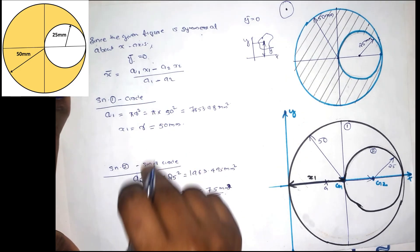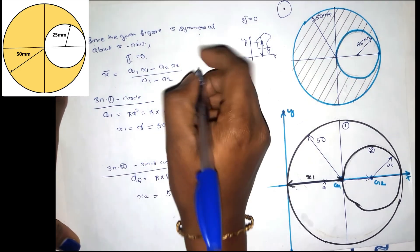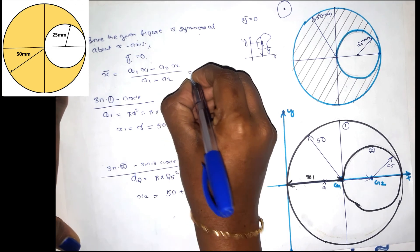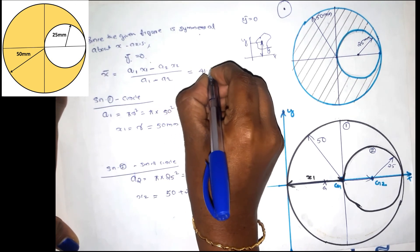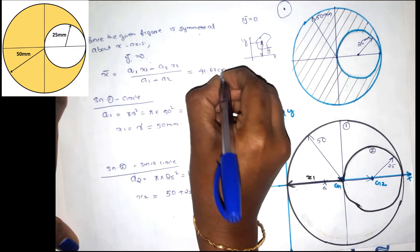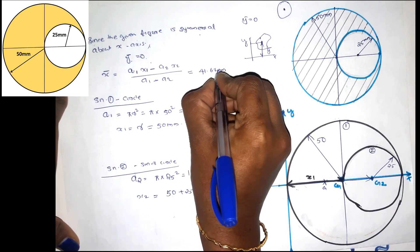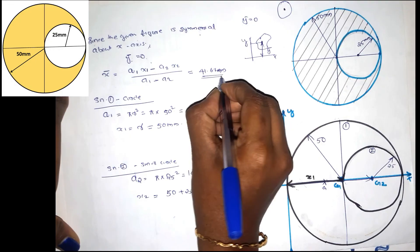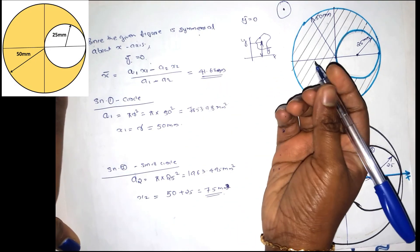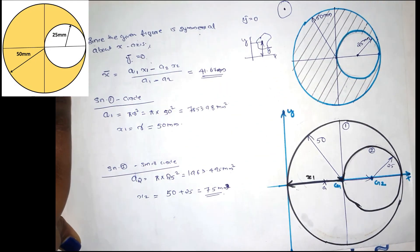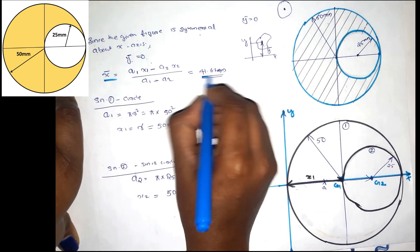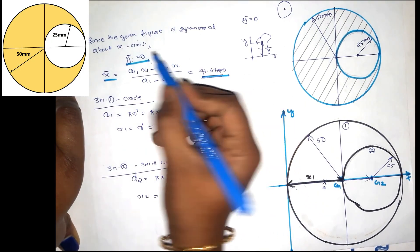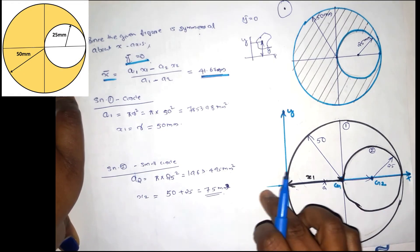Now we substitute into the equation. The result gives us X bar equal to 41.67 mm. We also have Y bar equal to 0, since we used the reference axis of symmetry.